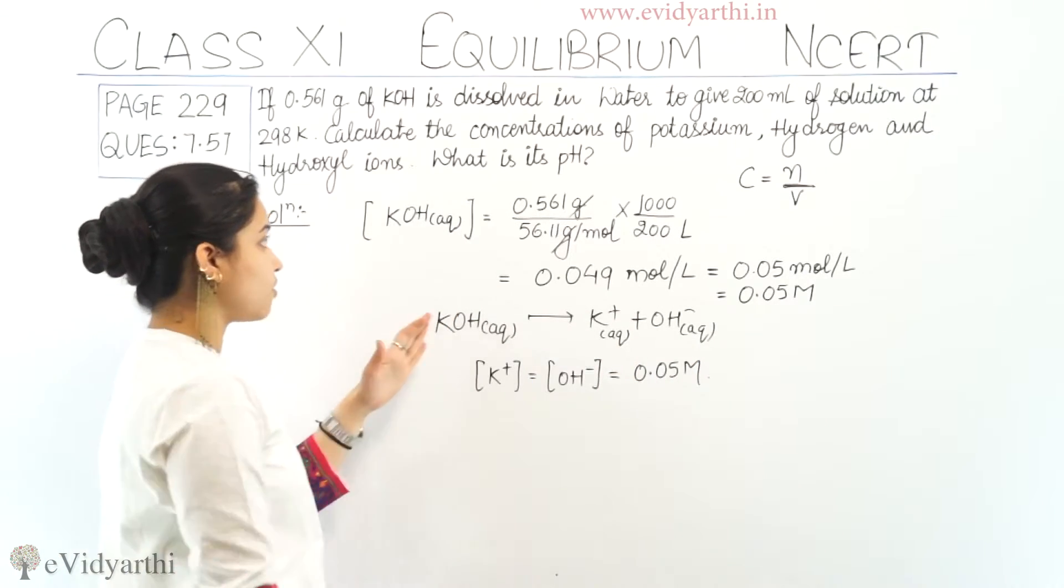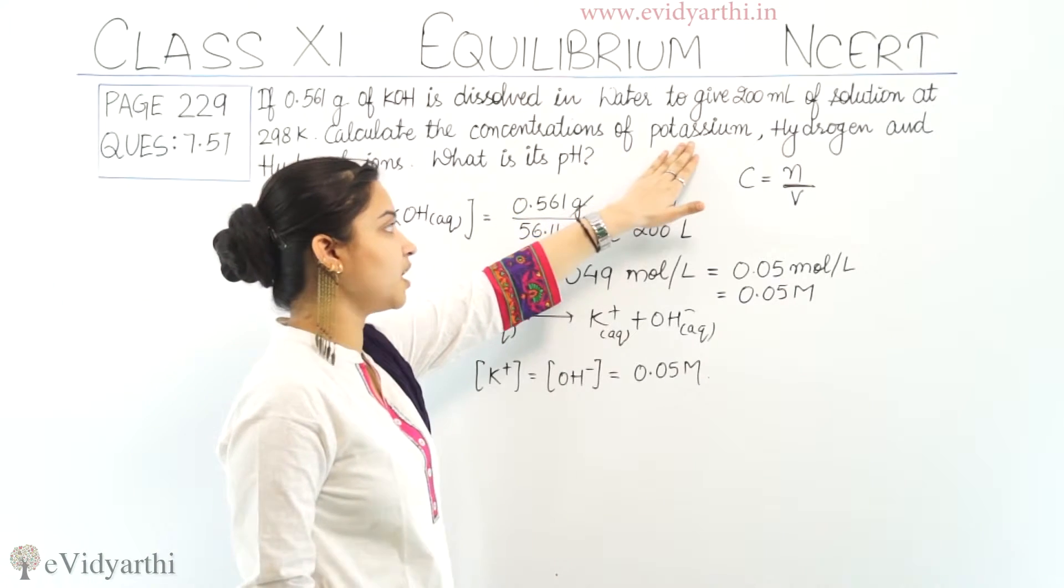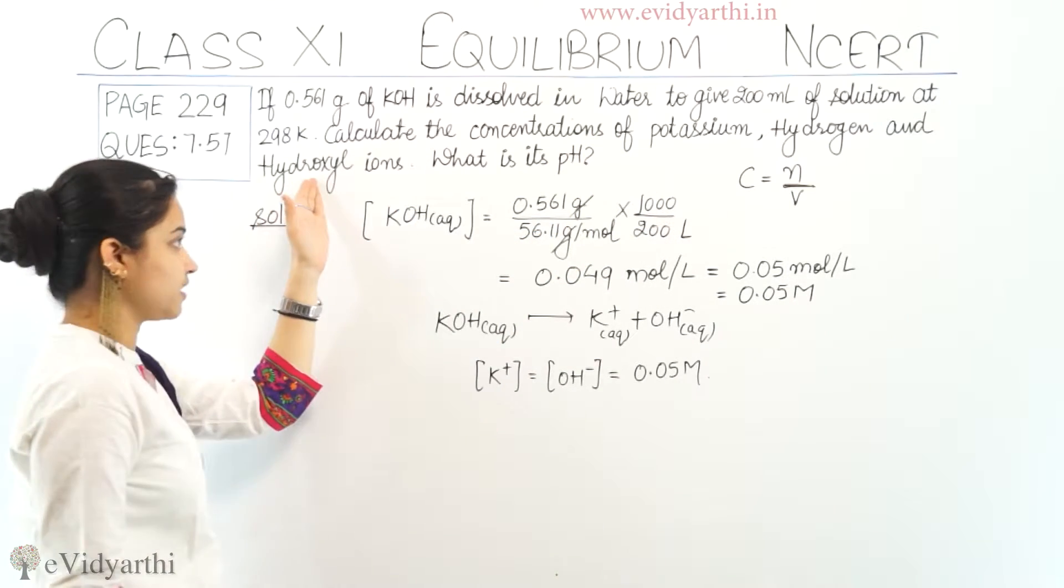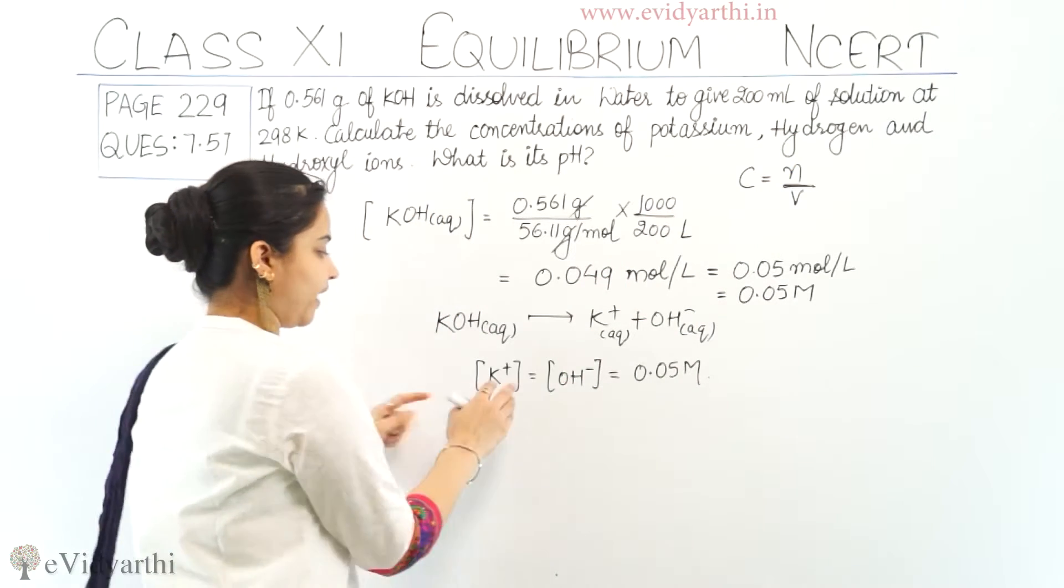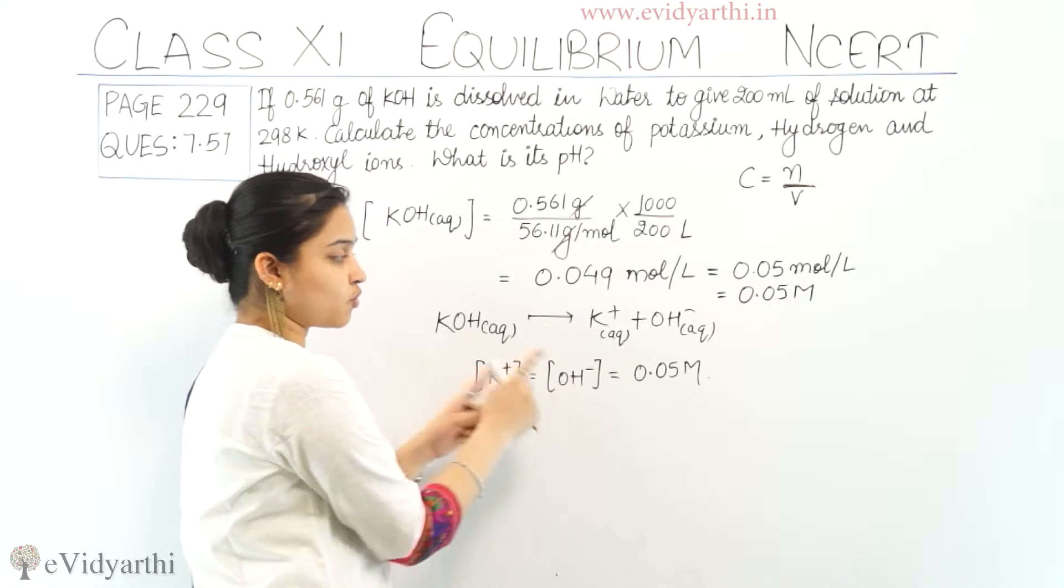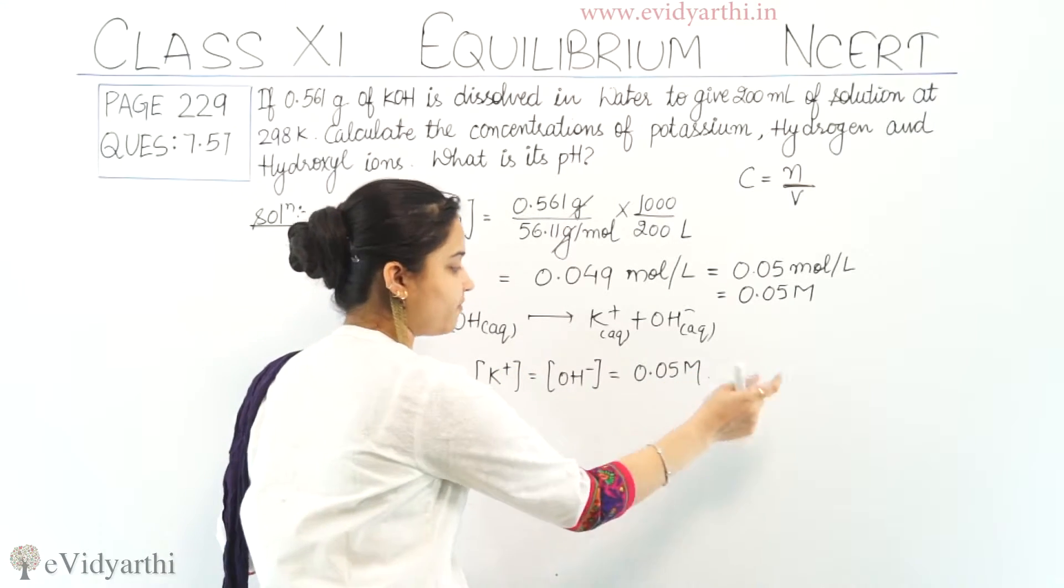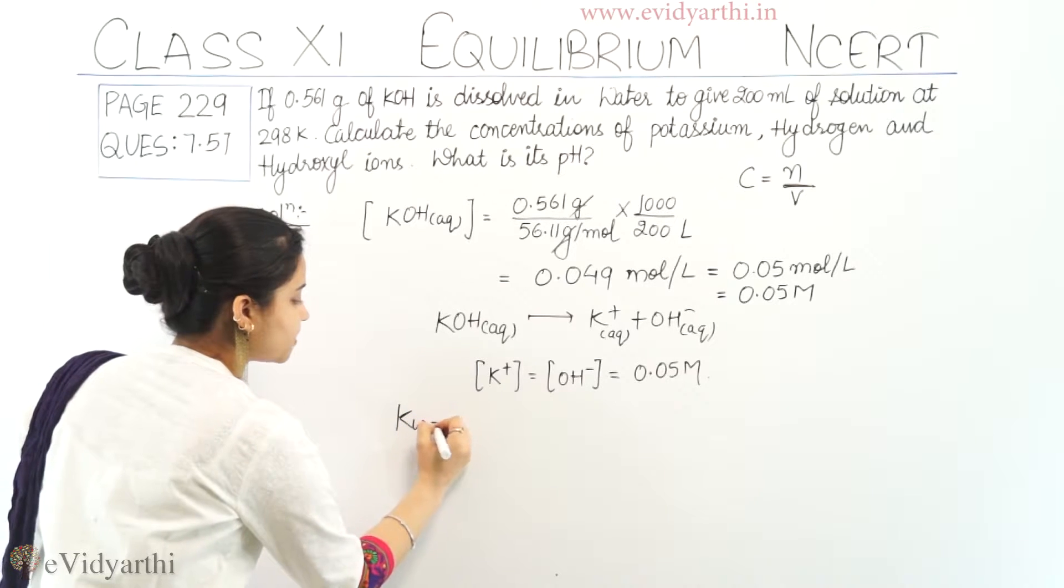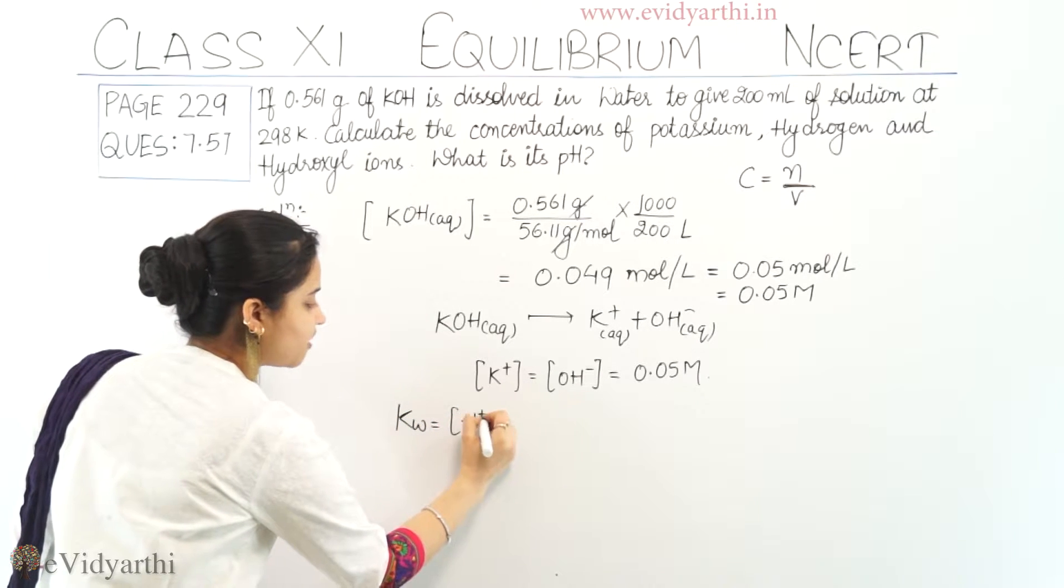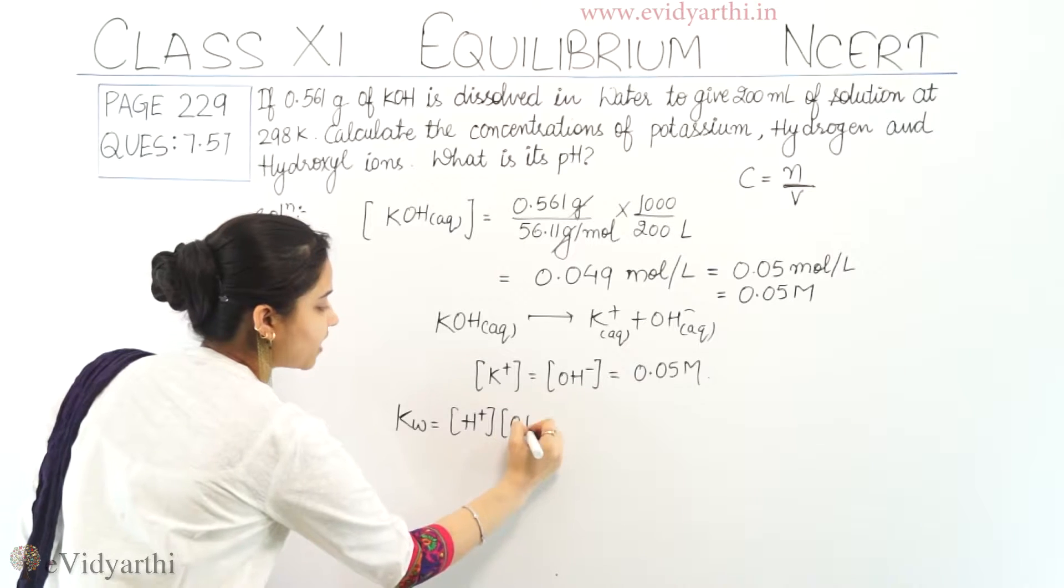Haom ne abhi kis ki concentration nikaali, haom ne concentration nikaali potassium or hydroxide ion ki. Ab concentration nikaalenge hydrogen ion ki. Potassium and hydroxide ion ki jo concentration it is 0.05 molar. Aap sabhi ko pata hai ki ionic product of water KW is equals to H positive multiplied by OH negative.